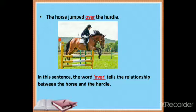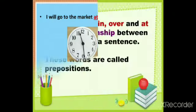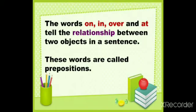In this sentence, the word 'over' tells the relationship between the horse and the hurdle. In this sentence, the word 'at' tells the relationship between the market and the time. The words 'on', 'in', 'over', and 'at' tell the relationship between two objects in a sentence. These words are called prepositions.